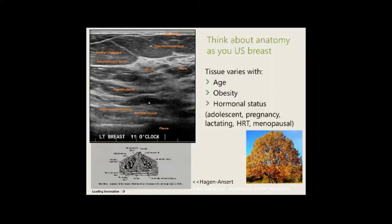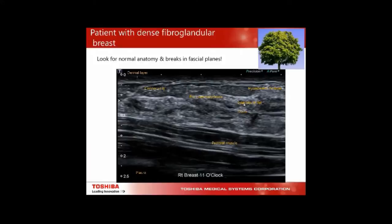This is particularly evident when scanning in radial and anti-radial. Dense fibroglandular breasts can hide things quite easily, particularly smaller cancers or diffuse cancers. Diffuse cancers can be picked up by recognizing the ducts going through areas of interlobular fat.